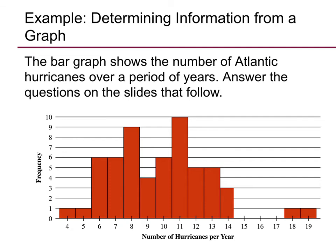This next example has us looking at a histogram and answering a few questions. This one is the number of Atlantic hurricanes over a period of years. The horizontal axis is the number of hurricanes per year; the vertical axis is the frequency. For example, this bar right here represents ten hurricanes per year happening six times — meaning there were six different years where we measured ten hurricanes. That's how we need to read this graph.